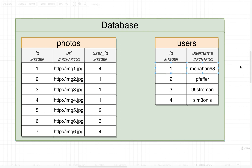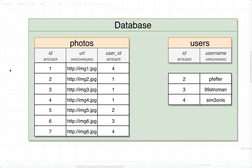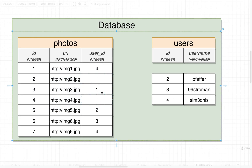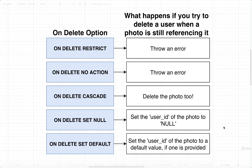When we make use of foreign keys, we can specify options for exactly what we want to happen whenever we try to delete a record that some other rows are dependent upon. In this case, these three photos are dependent upon the user with ID number 1. We have a couple of different options — five in total — for what to do whenever we try to delete that dependent record.